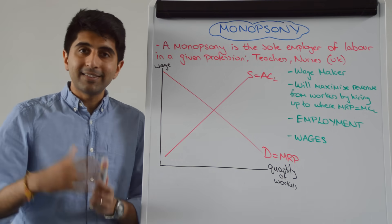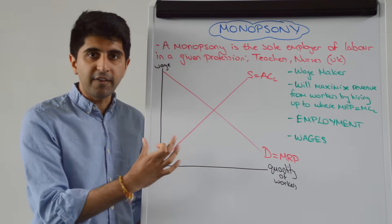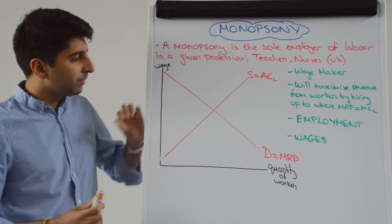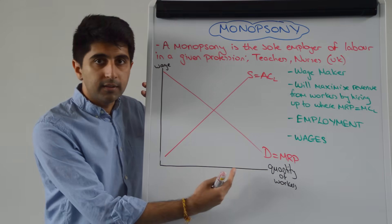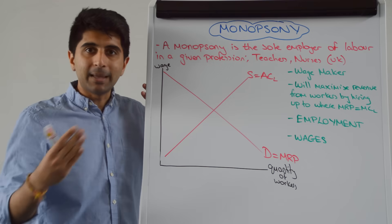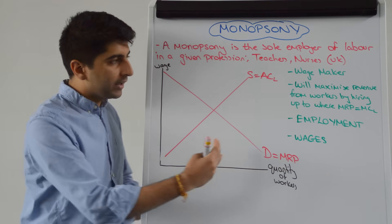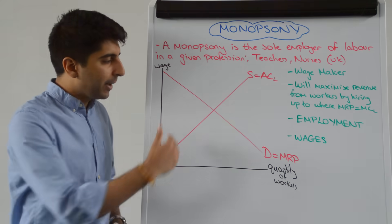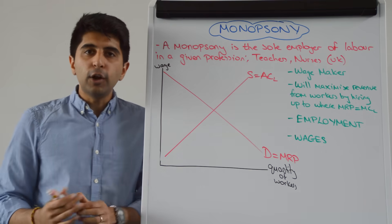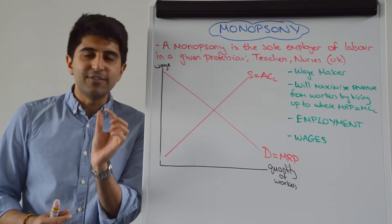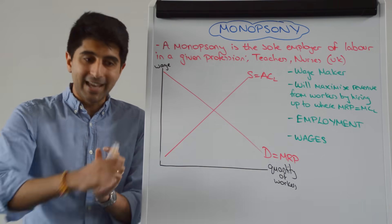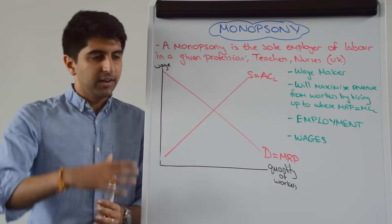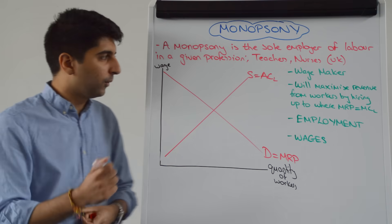The upward slope of the supply curve is important — it tells you that the monopsonist is confined by it. If they want to employ more workers, yes they have wage-making power, but to employ more workers they have to increase wages. And as they increase wages, they don't increase the wage just for the additional worker — they increase wages for every worker, including those who came before.